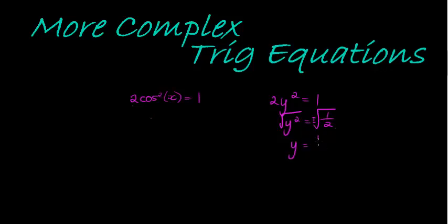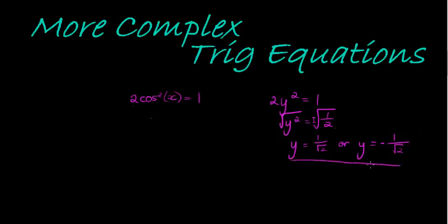So we would have y = 1/√2, or y = -1/√2. We recognize this equation has two solutions because it's a quadratic equation — our unknown has an exponent to the power of 2. If it was to the power of 3, you would get three solutions, and so on.